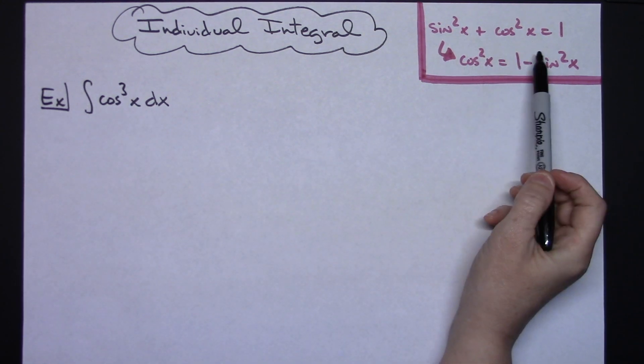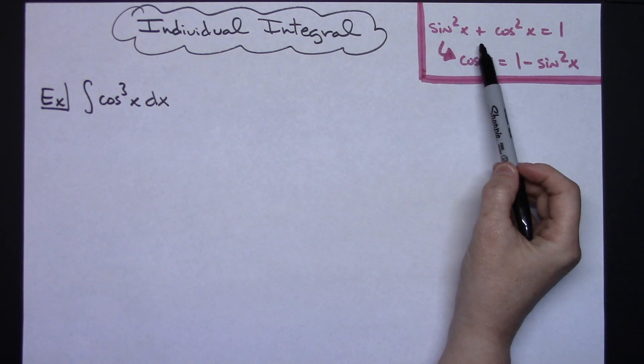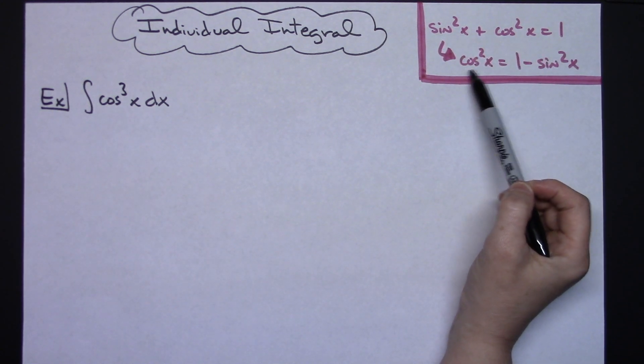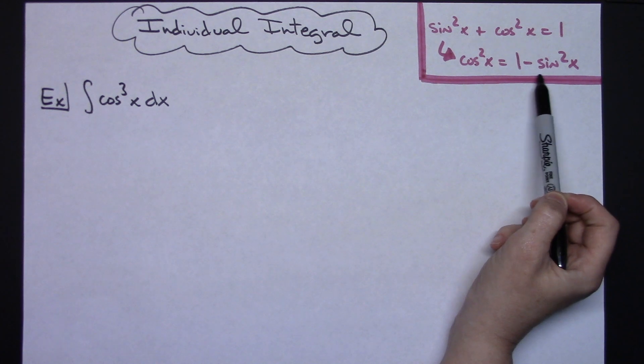I am going to be using this Pythagorean identity sine squared x plus cosine squared x equals 1, and we solve that for cosine squared x so that I can do a substitution.